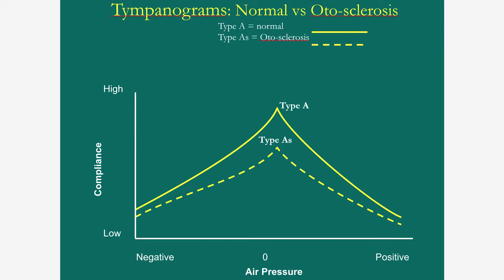Figure one shows you the tympanogram of a normal hearing person compared to the tympanogram of somebody with otosclerosis. When you're looking at a tympanogram, the horizontal axis represents air pressure - positive, neutral or zero, and negative. The vertical axis represents the stiffness of the middle ear, or its inverse compliance. The more compliance something is, the less stiff it is.